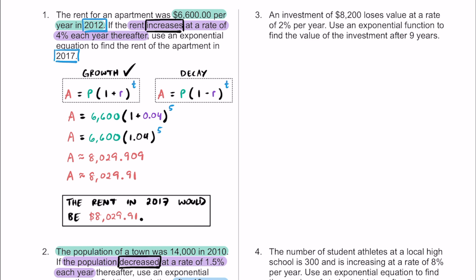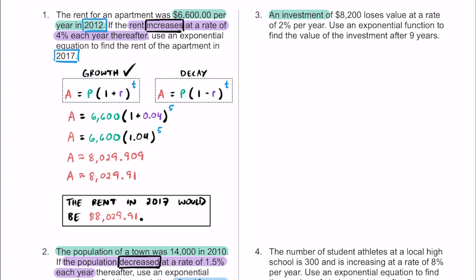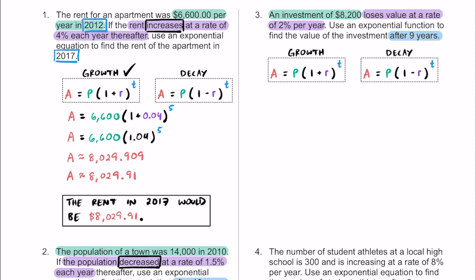Here's number three. An investment of $8,200 is going to lose value at a rate of 2% per year — not a great investment. We'll use an exponential equation to find the value after nine years. The initial investment is $8,200, the rate of change is 2% per year, and the time period is nine years. The keyword "loses" tells us this is a decay function, since the investment is going down over time.